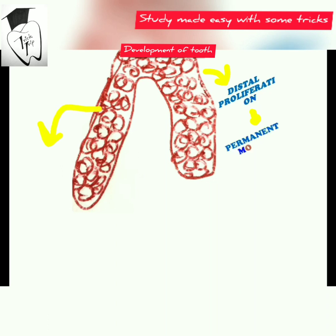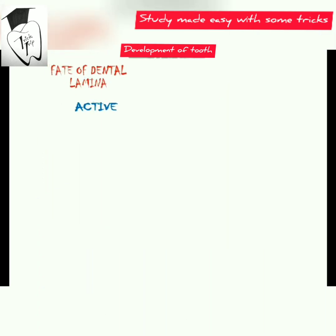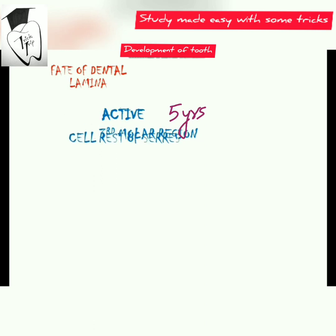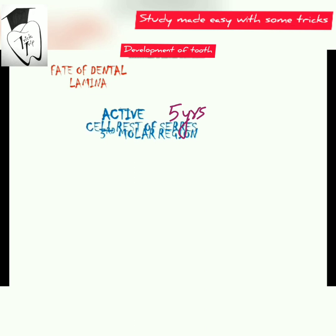The permanent molars develop in the ramus of the mandible or the tuberosity of the maxilla. The lingual extension is the successional lamina, which is responsible for the incisors, canines, and premolars. The dental lamina remains active up to five years and may still be active at the third molar region. The remnants of the dental lamina are called cell rests of Serres, which is very important from an exam point of view, especially in viva.